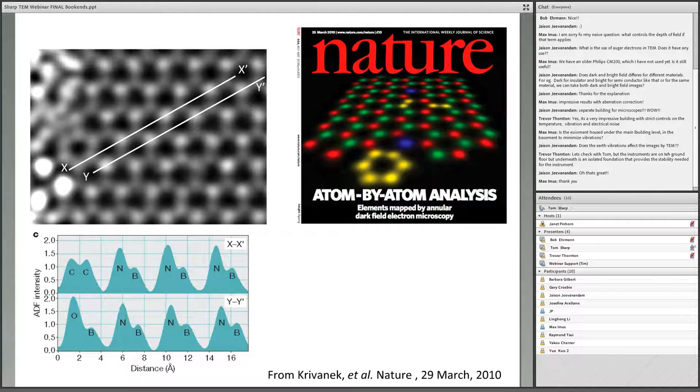If you do a line profile across this image, you'll see down here in the intensity profile that the intensity varies in a very systematic way and you can distinguish the different atoms. Here we have two carbon atoms, then nitrogen, boron, nitrogen, boron, nitrogen, boron, and so on. This really bright peak here, this is an oxygen atom substituting for nitrogen, and then we have boron and nitrogen again after that.